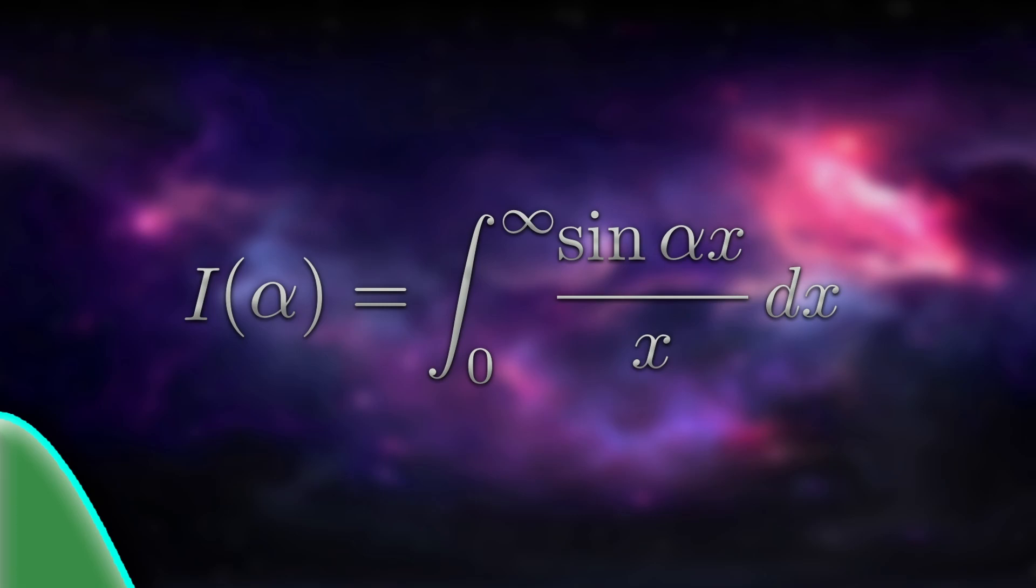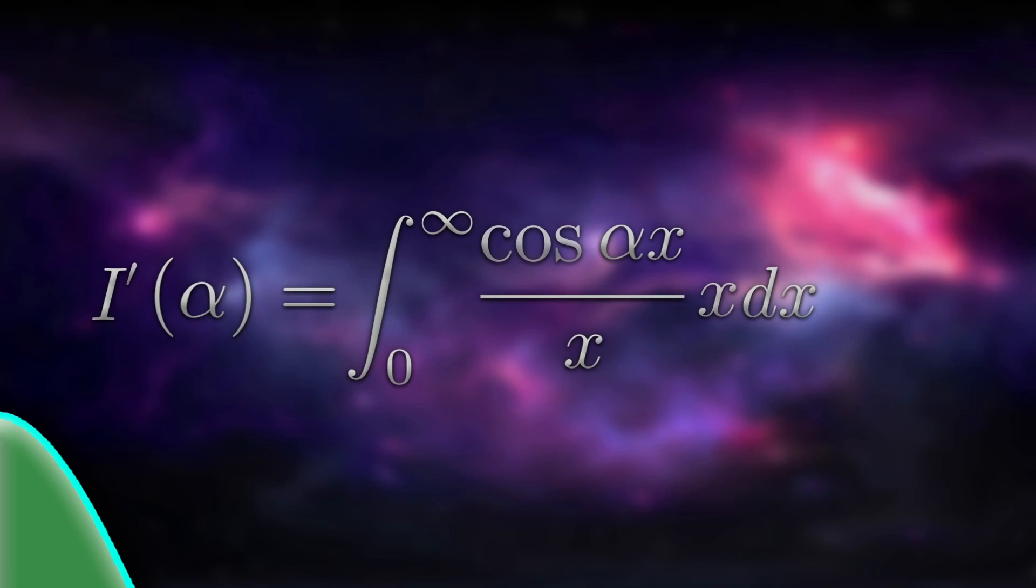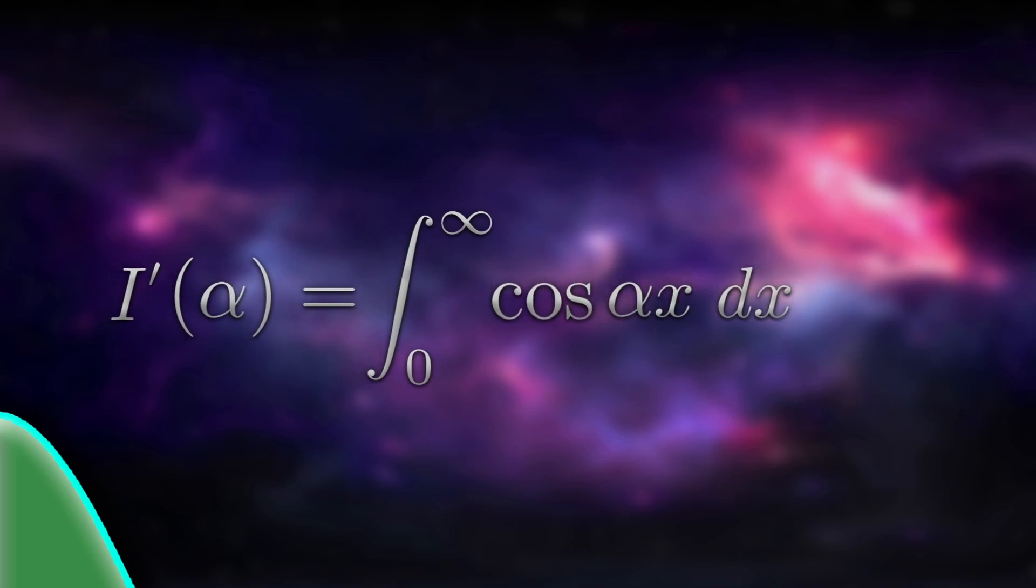The idea is that we're going to differentiate with respect to alpha, which will give us a function which we'll hopefully be able to integrate with respect to x. Before I show you, I want to make it crystal clear what we're about to do. We're going to differentiate sine alpha x over x with respect to alpha, meaning we're treating x as though it's a constant. The derivative of sine is cos, so we replace sine of alpha x with cos of alpha x. We then use the chain rule and multiply by the derivative of alpha x with respect to alpha, which is x. In this example, the x's cancel very nicely. This is indeed a function which we know how to integrate. The trick worked!